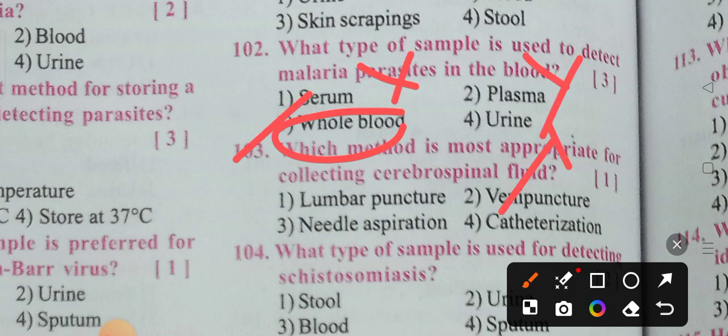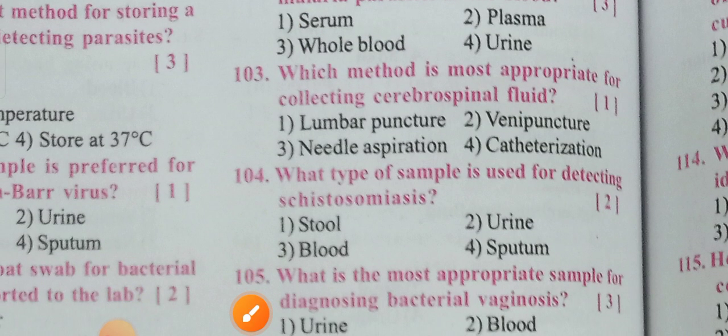Next: Which method is most appropriate for collecting cerebrospinal fluid? Options: lumbar puncture, venipuncture, needle aspiration, or catheterization. The correct method is lumbar puncture, as discussed multiple times previously. Option one — lumbar puncture — is the correct answer.